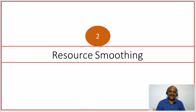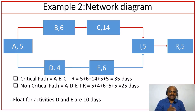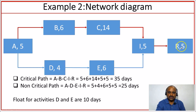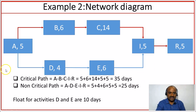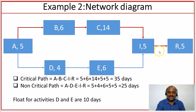Let us now understand what resource smoothing is. We have another example with a network diagram. We have two network paths: A, B, C, I, and R — with a duration of 35 days; and A, D, E, I, and R — with a duration of 25 days. The critical path is A, B, C, I, and R because that network path at 35 days is the longest. So the critical path is the longest path in the network diagram.